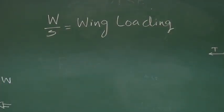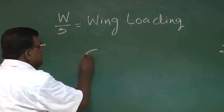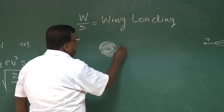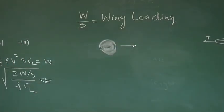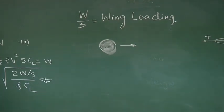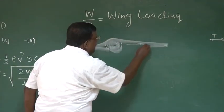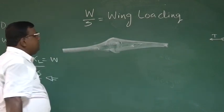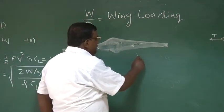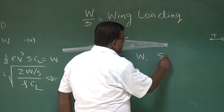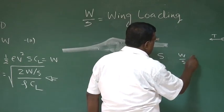Let us develop some feel for this wing loading. Suppose we want to lift a mass m by giving it a forward velocity. We can generate lift using a fixed wing. For a given weight of the airplane, if the area is S — the area of the wing — then the ratio W/S is called wing loading.